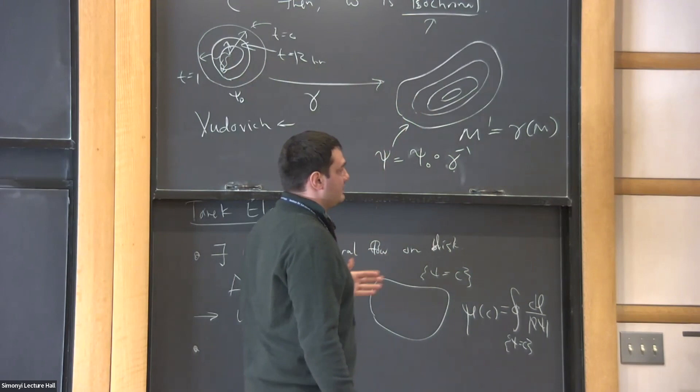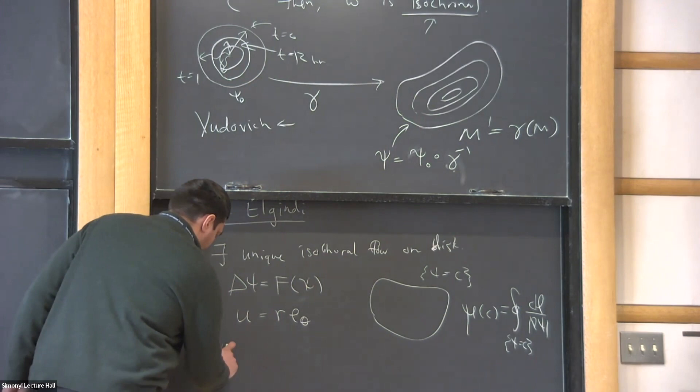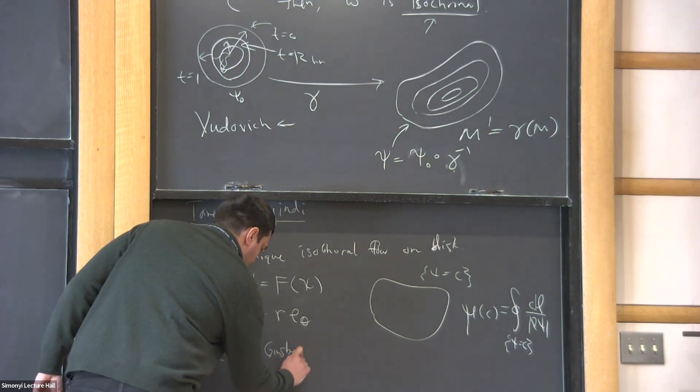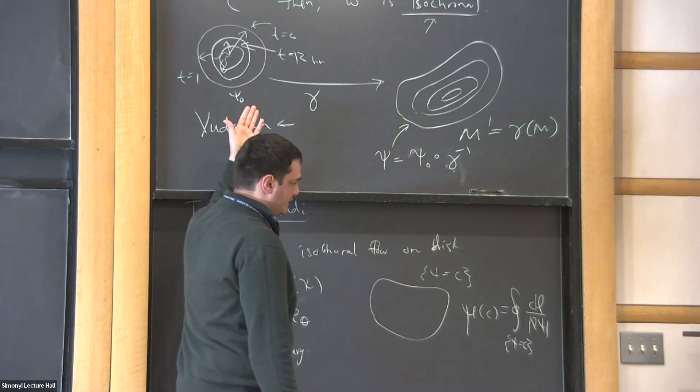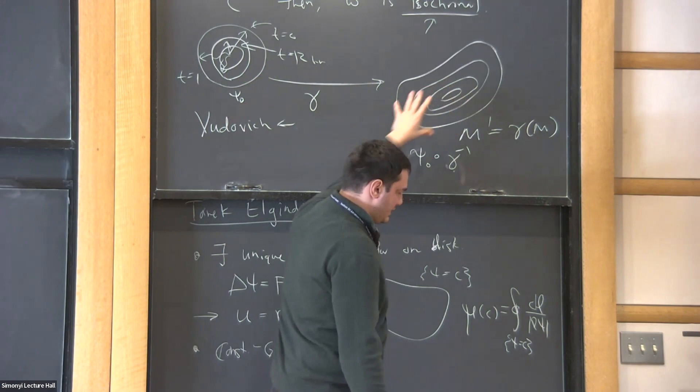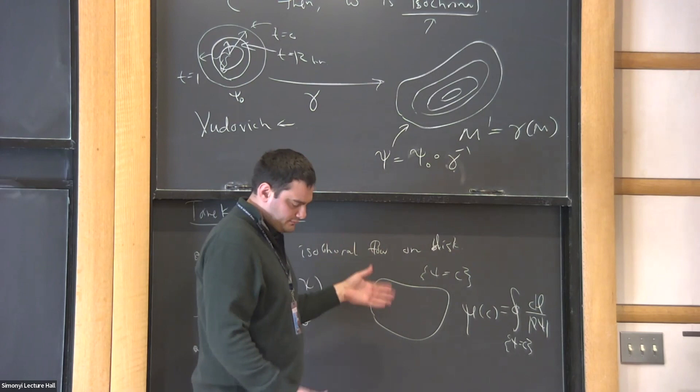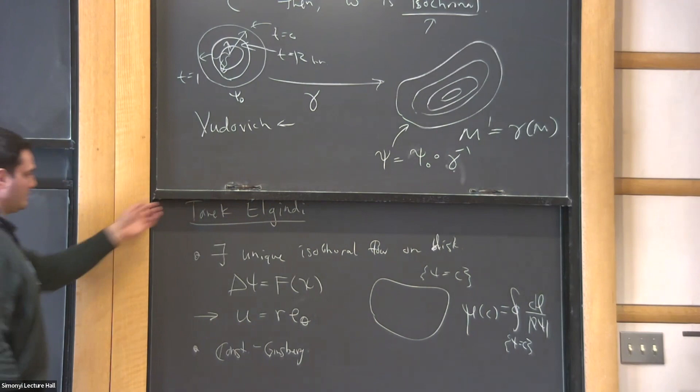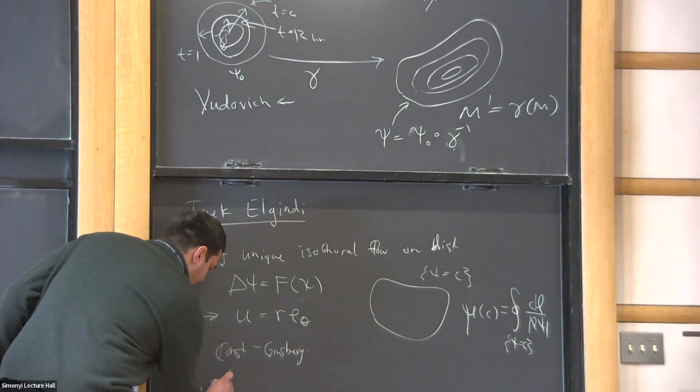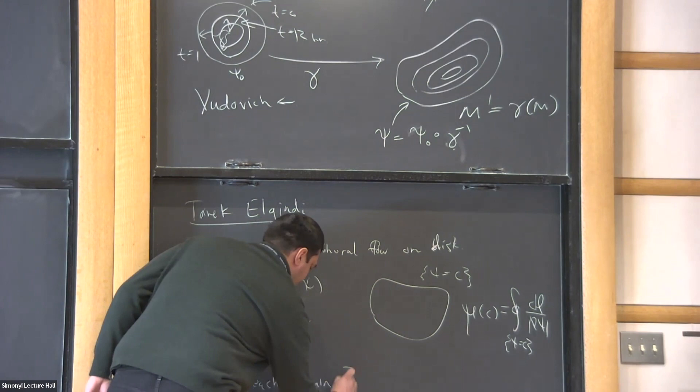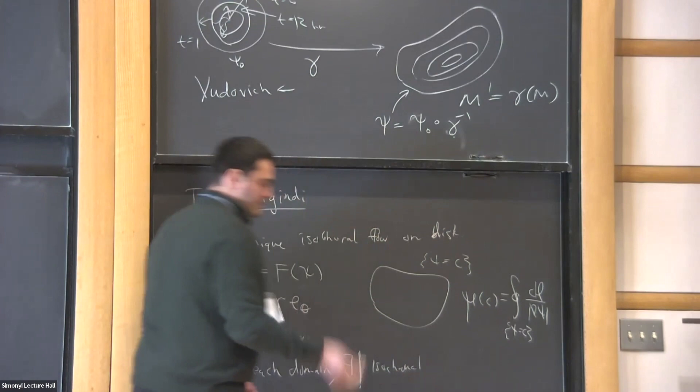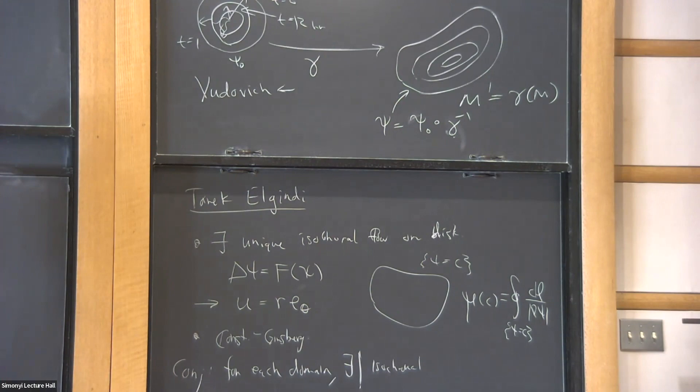There's a theorem that we have with Peter Constantine and Dan Ginsberg which allows us basically to uniquely do this construction to find a unique object on the orbit of the original stream function on a new domain. Applying that theorem allows us to generate new isochronal flows on these deformed vessels, the unique such there. So Tarek and I conjecture that for each domain, there exists a unique isochronal flow up to scalings. This is at least true near disks. Maybe that's it.